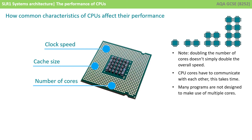CPU cores have to communicate with each other. The more cores you have, the more communication needs to take place to keep everything in sync, and this costs time and efficiency. On top of this, many programs are simply not designed to make maximum use of multiple cores.